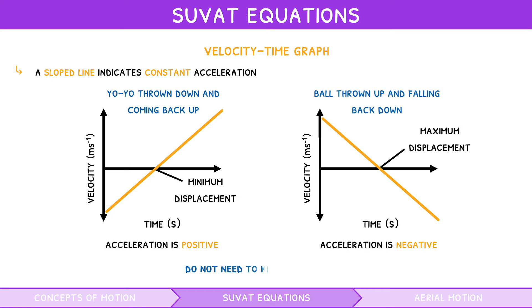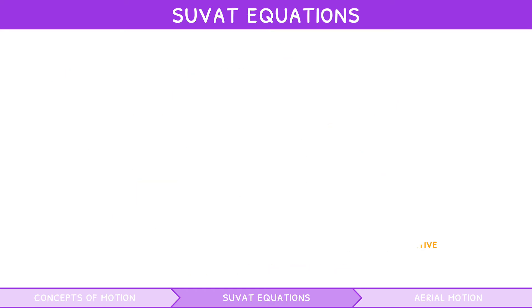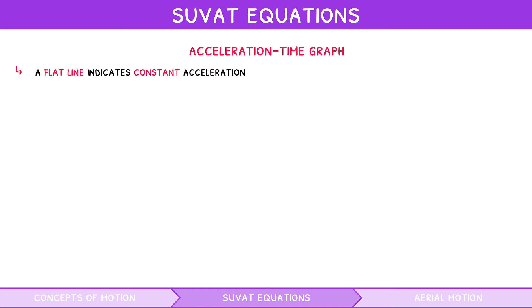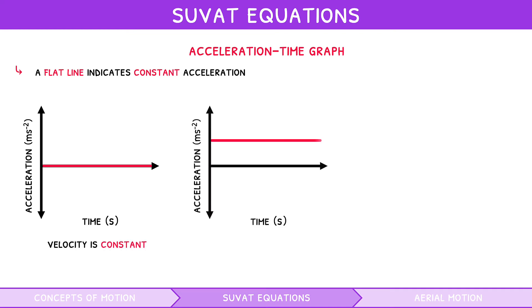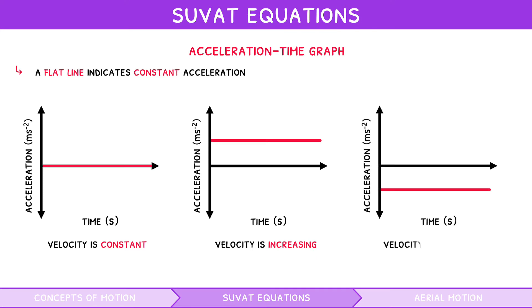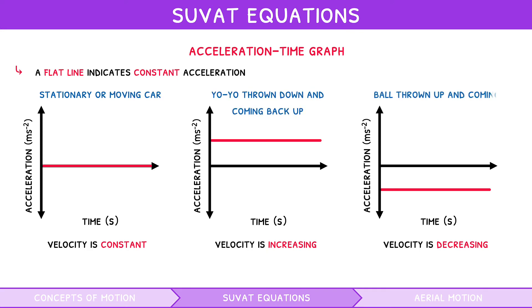You do not need to know curved lines for the velocity-time graphs. In an acceleration-time graph, a flat line indicates constant acceleration. If it is zero, velocity is constant; if it is positive, velocity is increasing; if it is negative, velocity is decreasing. Examples include a stationary or moving car, a thrown yoyo, and a thrown ball, respectively. You do not need to know sloped or curved lines for acceleration-time graphs either.